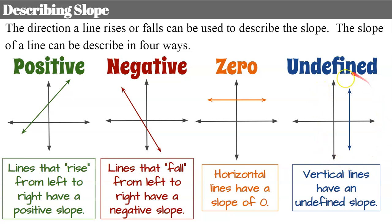This is also one of the reasons why a vertical line is not a function. It fails the vertical line test, is not a function, and has an undefined slope.